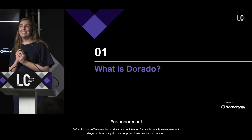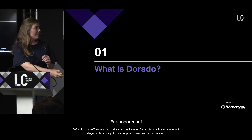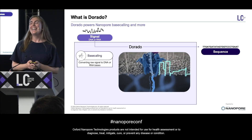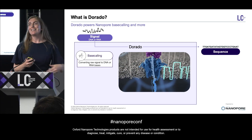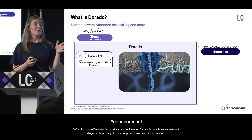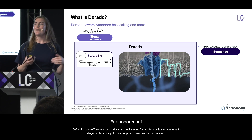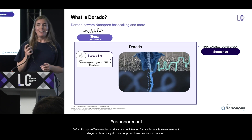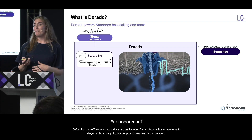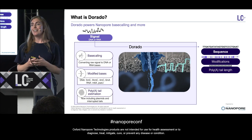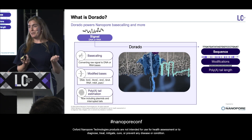So what is Dorado? Dorado is a software tool which does base calling and also powers additional analysis for nanopore. Base calling is the process of converting raw signal from the nanopore to DNA or RNA bases. Along with being able to do this, Dorado provides additional functionality to extract information about those bases, like modified base calling — for example, methylation in both DNA and RNA — and also poly-A tail estimation.